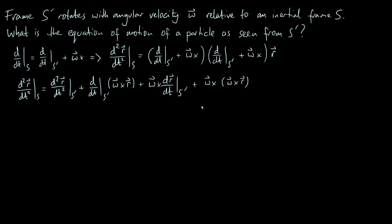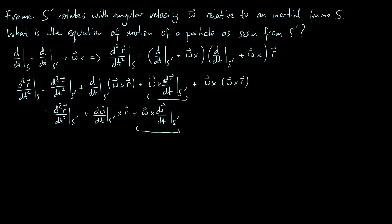We can use the product rule to simplify the second term. Keeping d²r/dt² in S-prime as the first term, the product rule gives d(omega)/dt in S-prime crossed with r, plus omega cross dr/dt in S-prime. But notice that this last piece is exactly the same as the third term we already have, so we can combine those two together and put a factor of two in front. We still have omega cross (omega cross r) at the end.